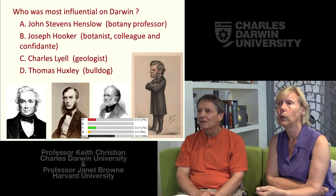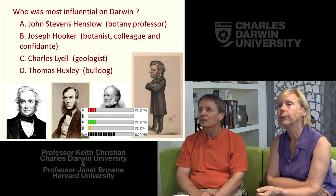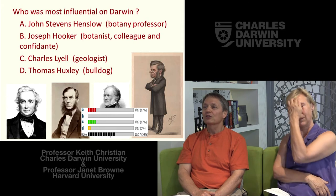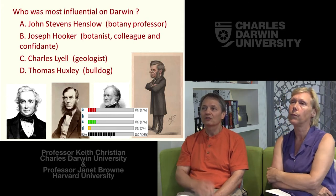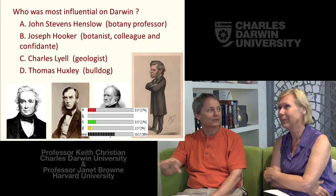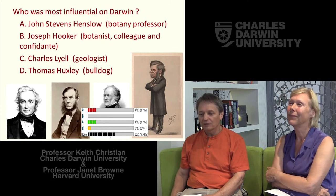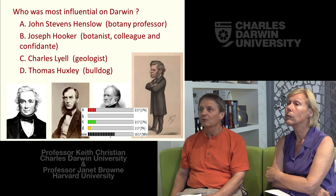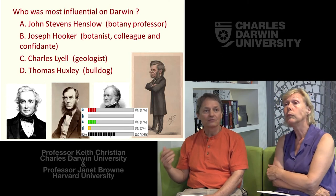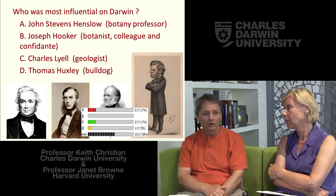Who do you think is the most influential? Huxley is probably not the best choice because he came later and really didn't influence Darwin as much as the other three. Obviously that's a list of very influential people, but there are others who also contributed to Darwin's development of the idea of evolution by natural selection — including his grandfather.